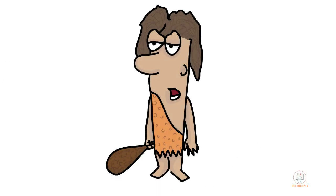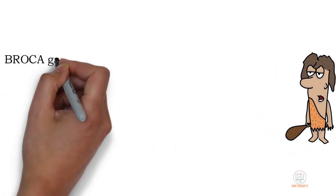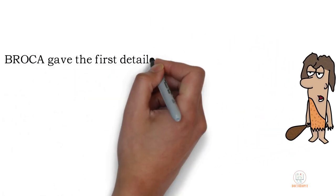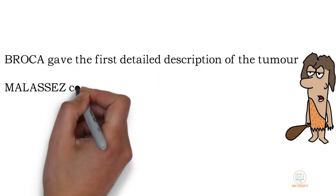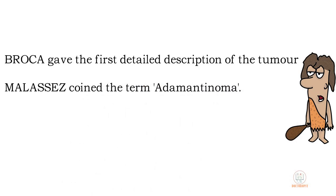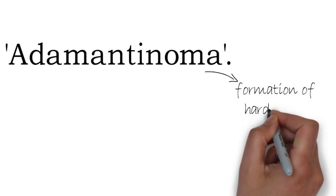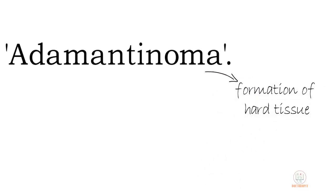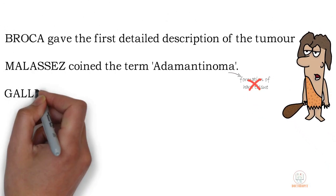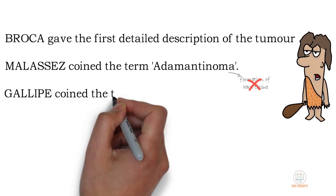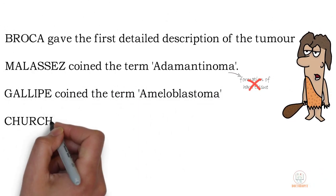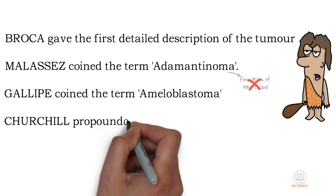Looking at the history of ameloblastoma, Broca gave the first detailed description of the tumor. It was initially called adamantinoma by Malassez, but the term adamantinoma implies that there is formation of hard tissue in the tumor, which is actually not the case. The term ameloblastoma was then suggested by Gallipe and then Churchill propounded it.